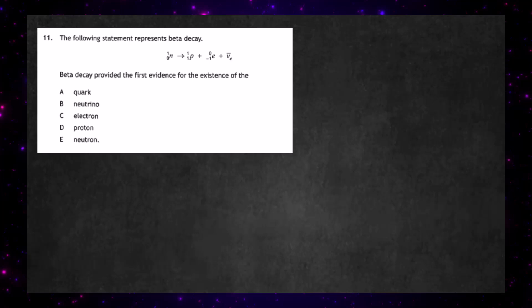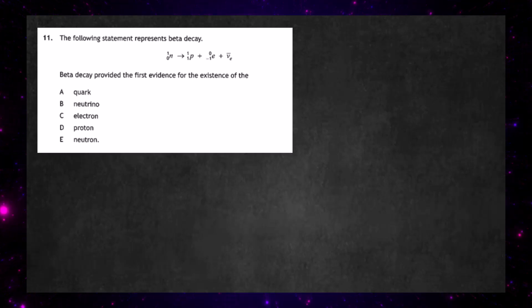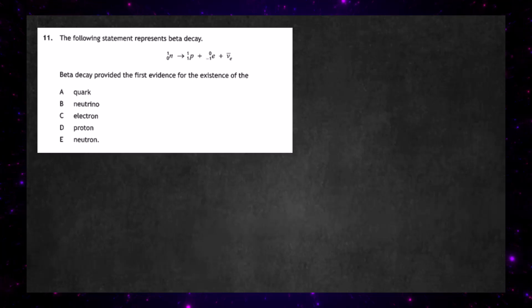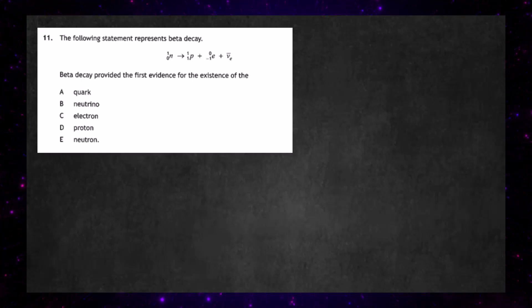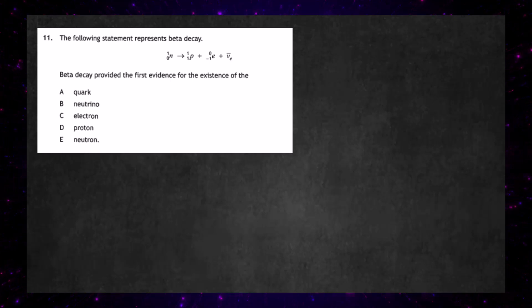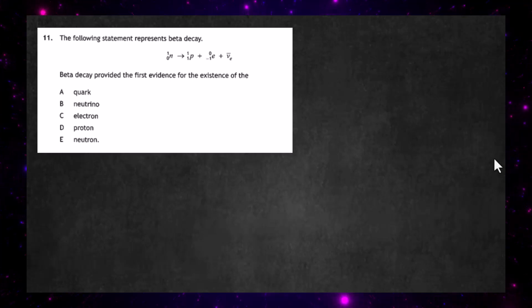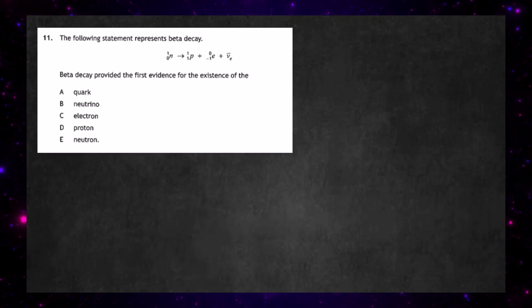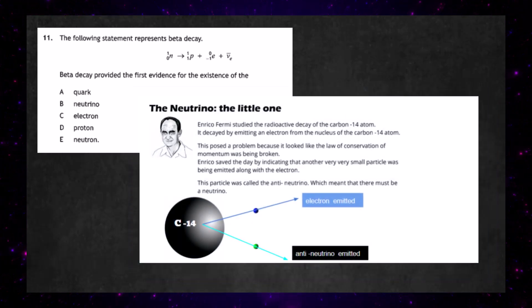Question 11 from the 2024 multiple choice part of the SQA Higher Physics. The following statement represents beta decay. Beta decay provided the first evidence for the existence of — and the answer is B — the neutrino.